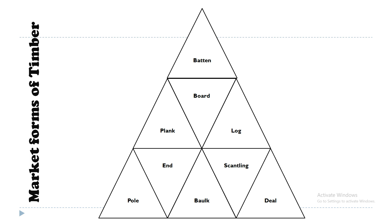Scantling has one dimension greater than 50 mm and the other dimension less than 200 mm. A deal is a form of timber in which the thickness is from 50 to 100 mm and the width should not be greater than 230 mm. Quartering is a square timber beam in which the cross section is square in shape, having a size of 50 to 150 mm — that is 50×50 to 150×150. All sections in between these sizes are called quartering.